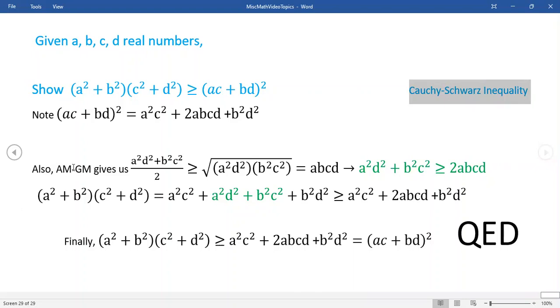But you can actually use what they call AM-GM to prove Cauchy-Schwarz. Now this is just a special case for n equals two, if you want to call it that, but we're working with four variables right here. We want to prove this result. This is Cauchy-Schwarz, a special case dealing with four variables.